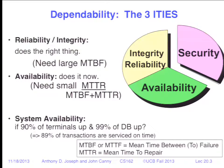This is where it gets tricky and people play games with numbers. Google, Apple, and Microsoft will have outages but say it only affected 0.04% of customers. If you're one of those customers who doesn't have email for two days, it's an outage — but for the other 99.96% of customers, it's not. This is how people typically play games with fault tolerance.